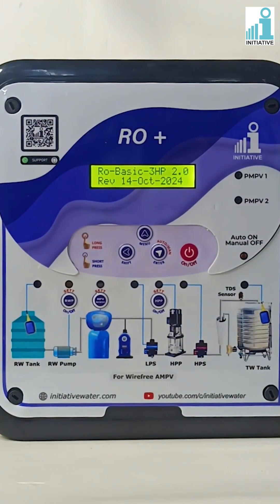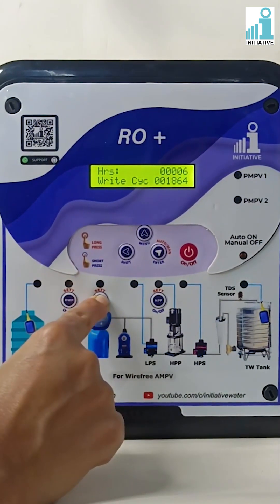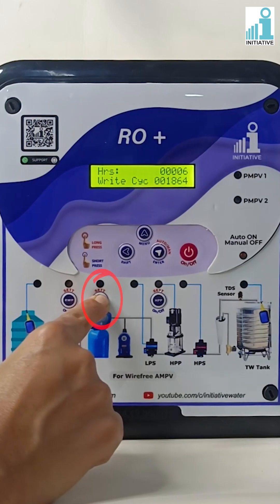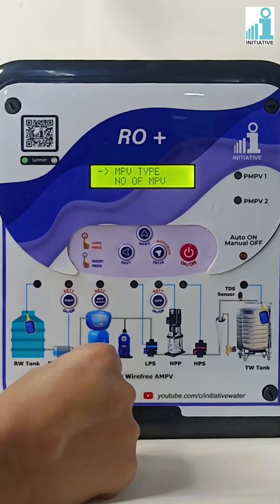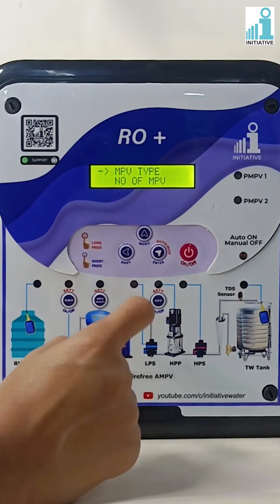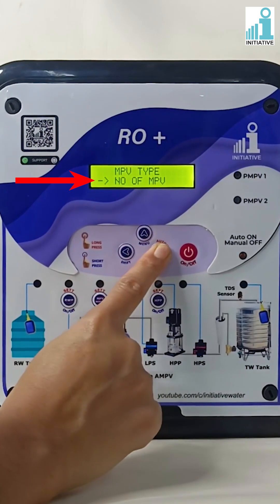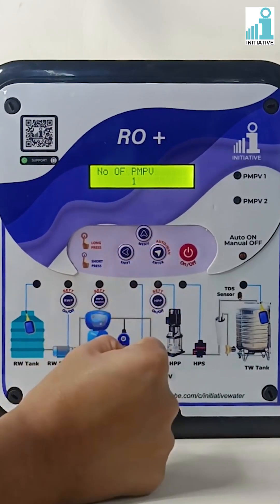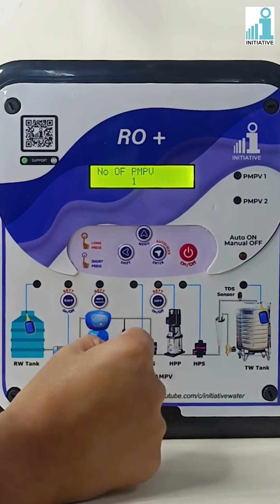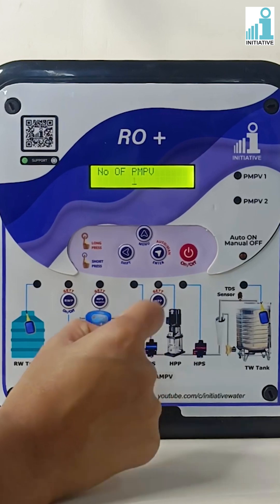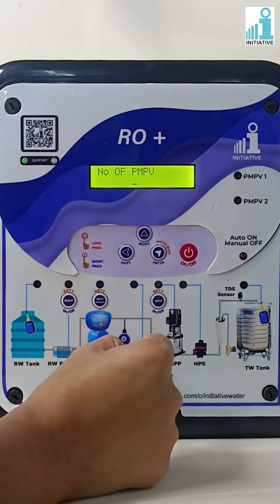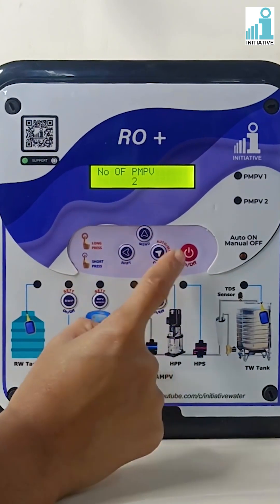To check the number of MPV, long press the MPV backwash key. Press Menu button to go to number of MPV. Press Enter. We can see the number of PMPV as 1. Press Menu button and change the number of MPV to 2. Press Enter to save the settings.